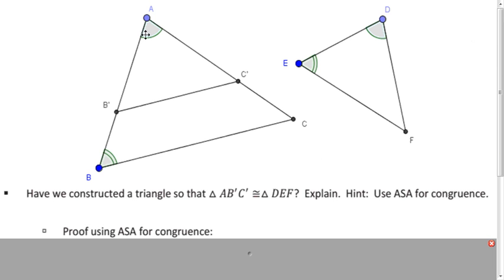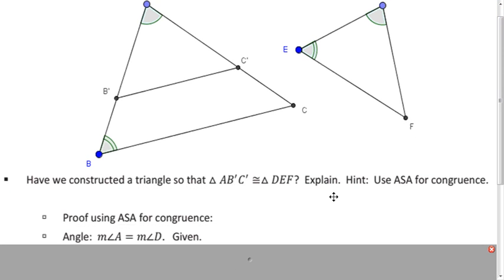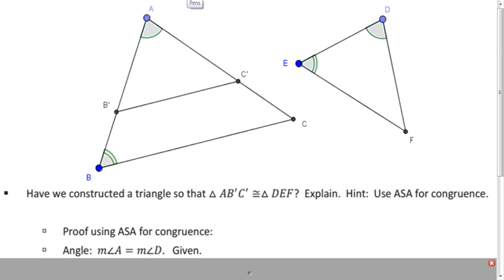Now the question is, is this small triangle, AB prime C prime, is that congruent to triangle DEF? It turns out it is. Let's do it with angle, side, angle. So, we know that A and D are equal in measure. That's given to us. And what about side AB prime? Why is that congruent to side DE?